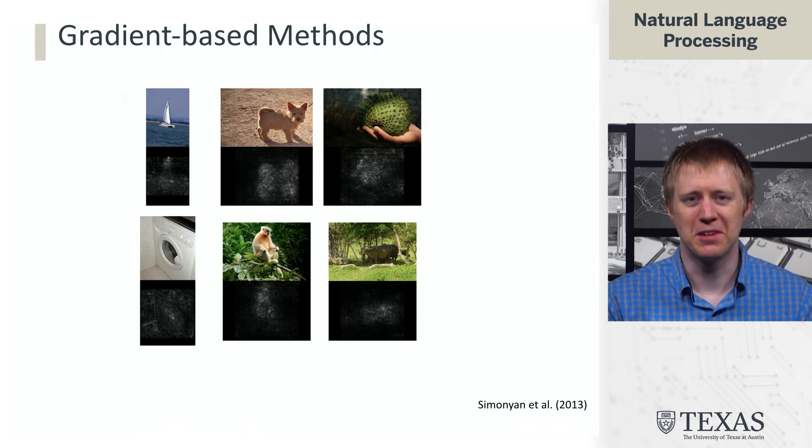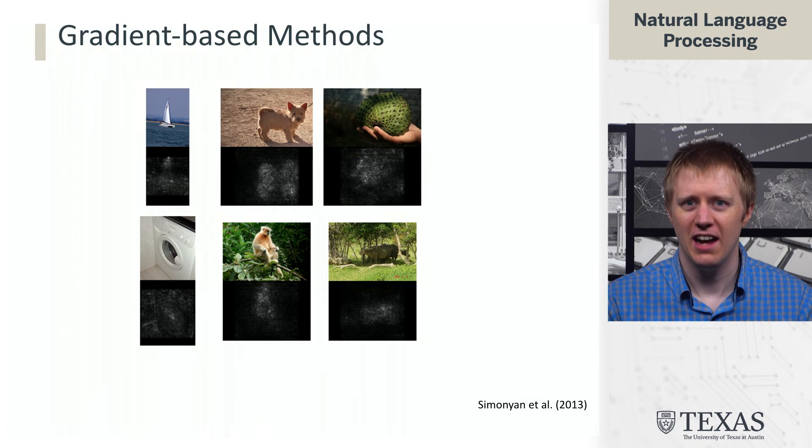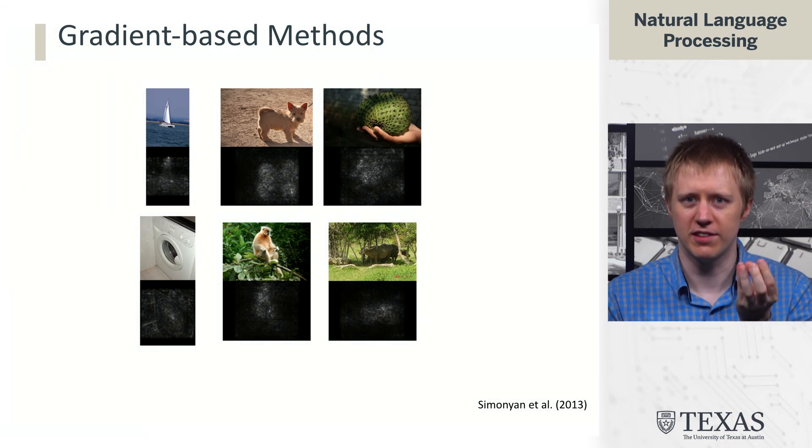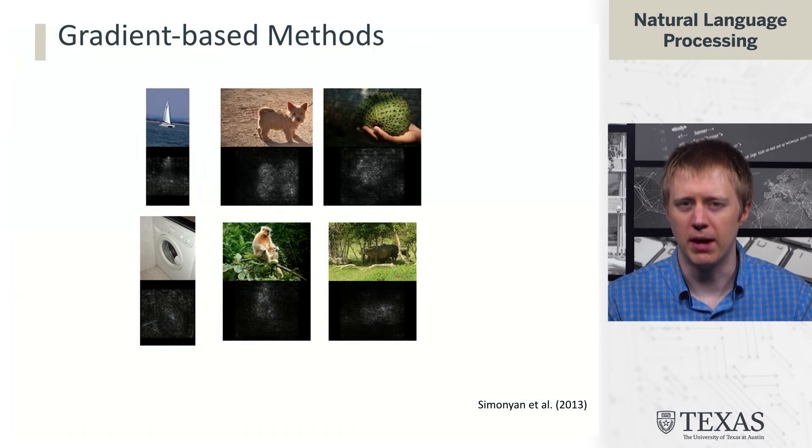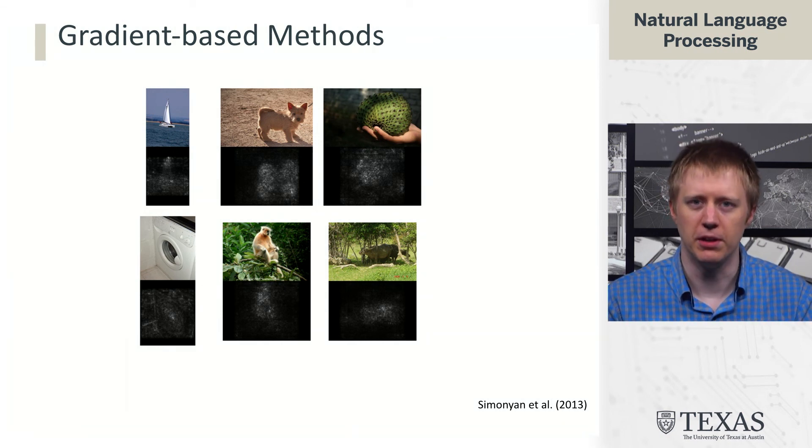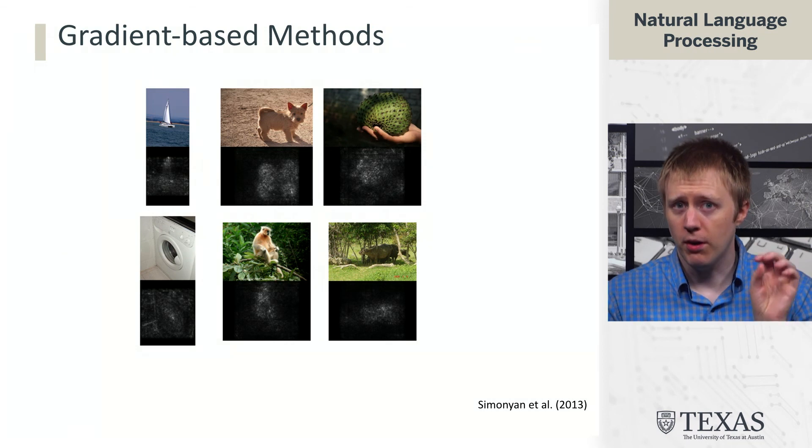And so the nice thing about computer vision examples is that they can have some nice visualizations. And so here we can kind of get a sense of, for certain object classes, why the model is making its predictions. And it's hard to fully tell what's going on here, but we at least get a sense that the model seems to be clued into pixels that are related to these kind of distinctive central features of the image, and we might think that it's likely to be looking at the right thing.